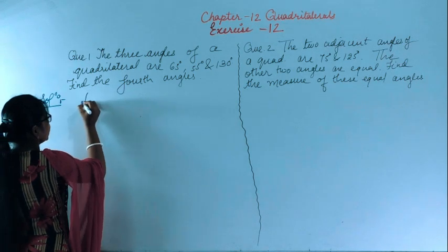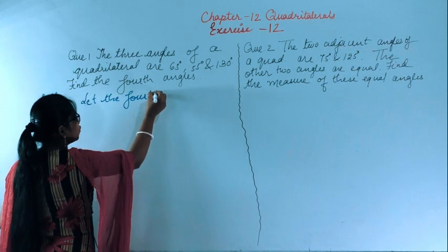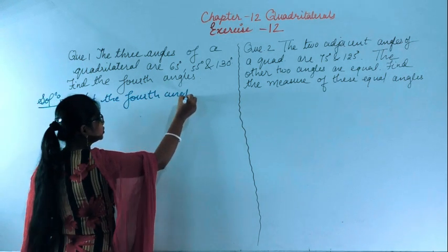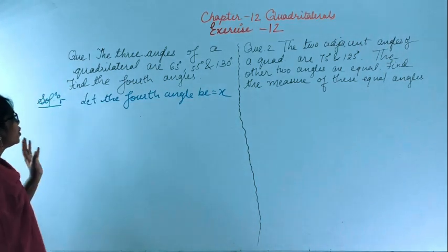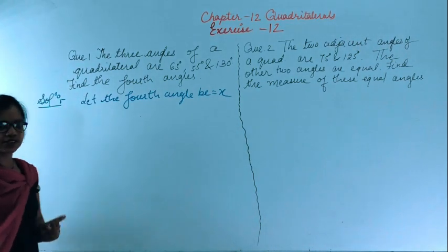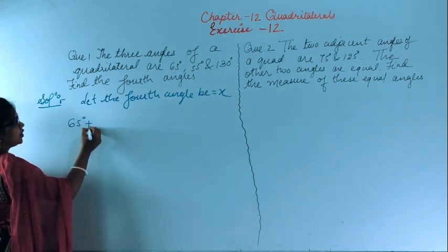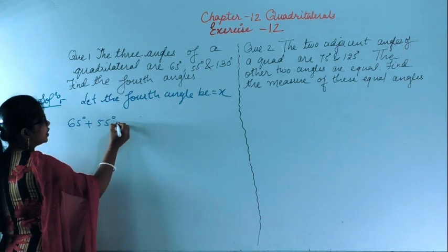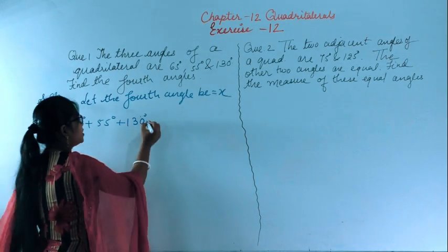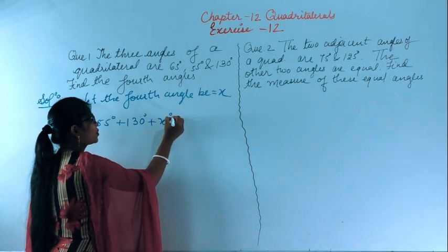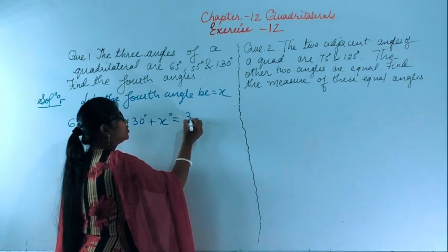So firstly, we will let the fourth angle be equal to x. Now you know that the sum of angles in a quadrilateral is 360 degrees. So we have the given angles: one is 65 degrees, second is 55 degrees, third is 130 degrees, and the fourth one we have taken as x. The sum of all four angles equals 360 degrees.